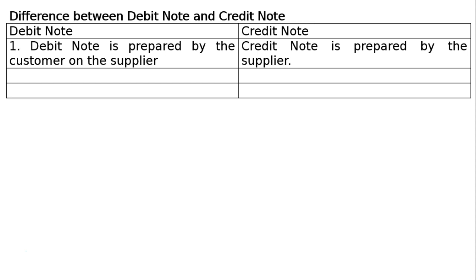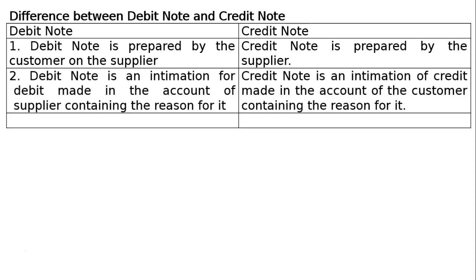The second difference is that a debit note is an important intimation of a debit made in the account of the supplier, containing the reason for it. While in case of credit note, a credit note is an intimation of credit made in the account of the customer, containing the reason for it.